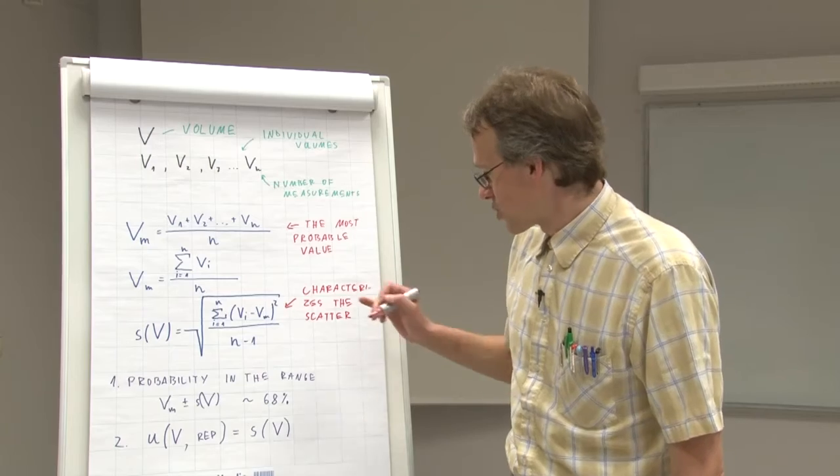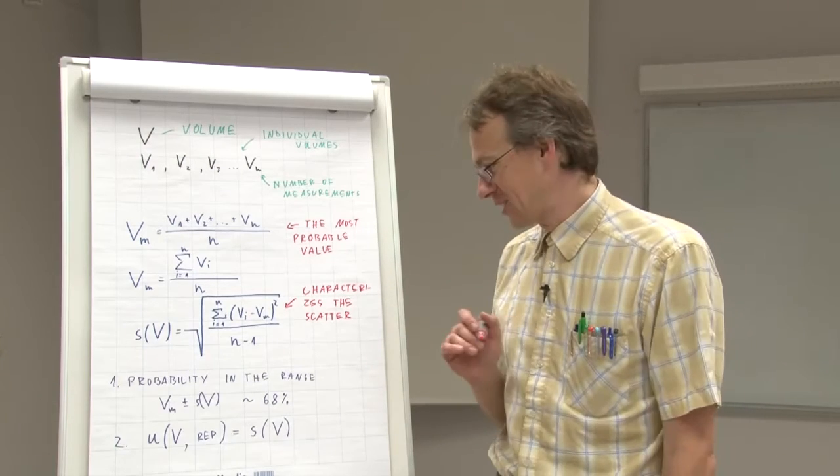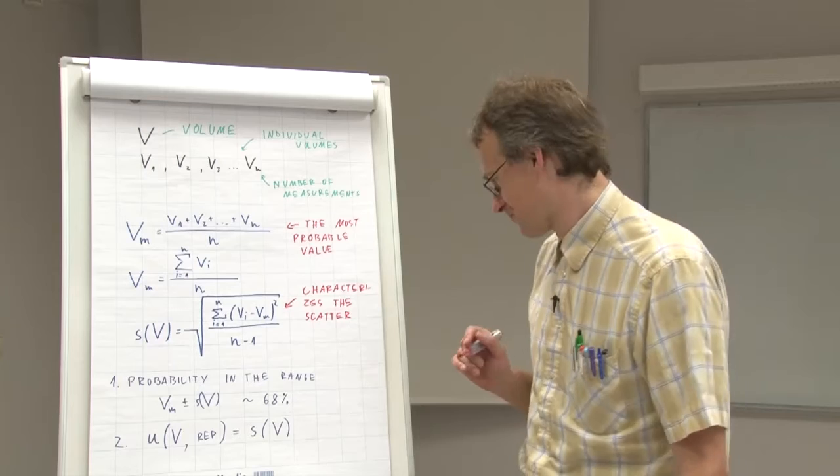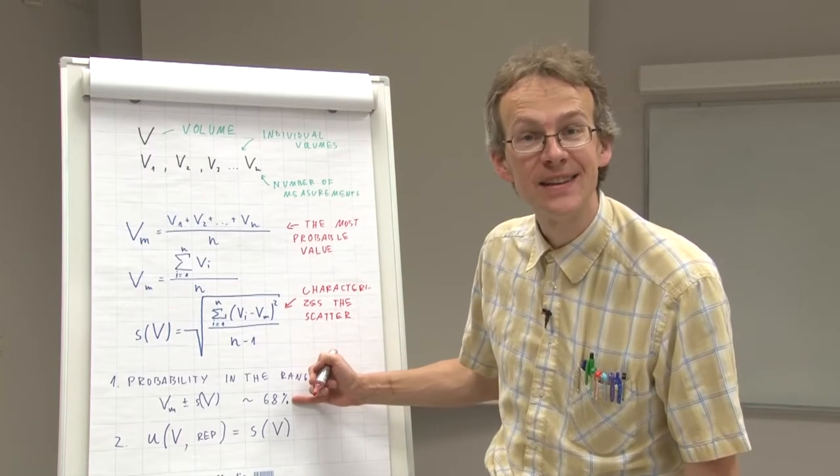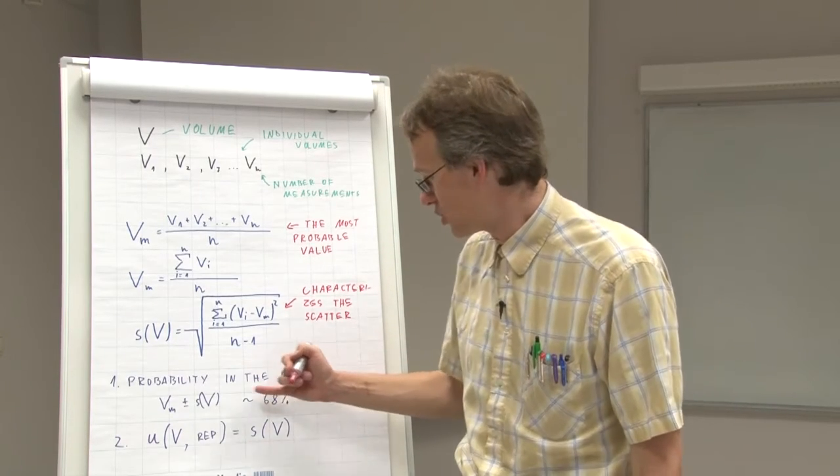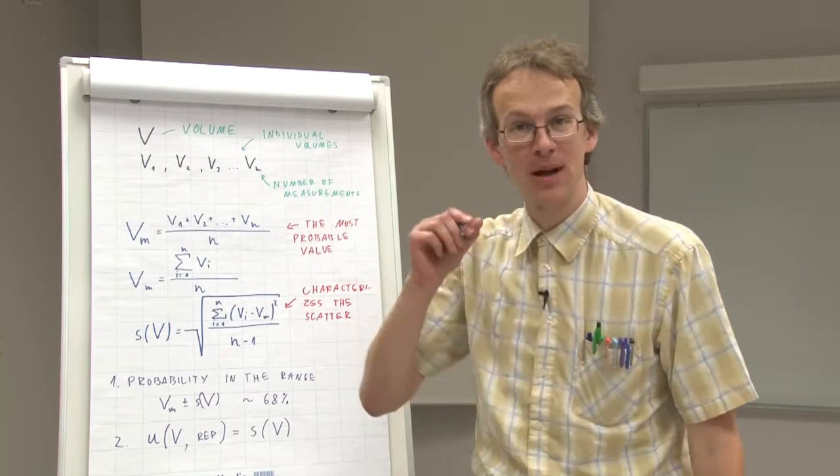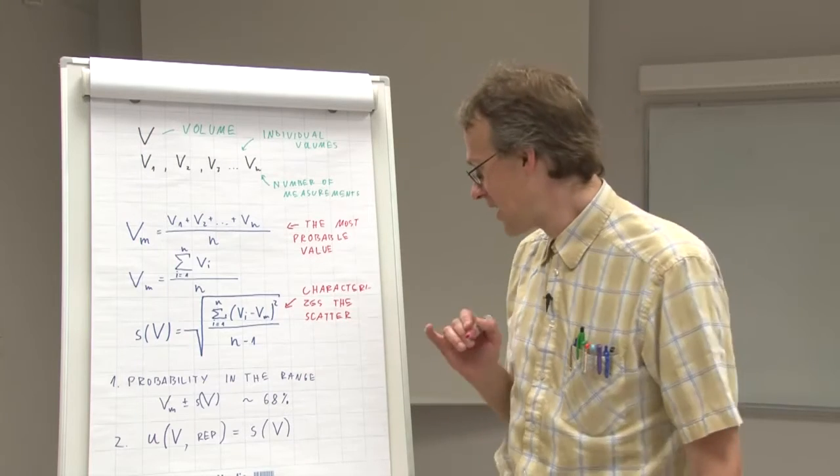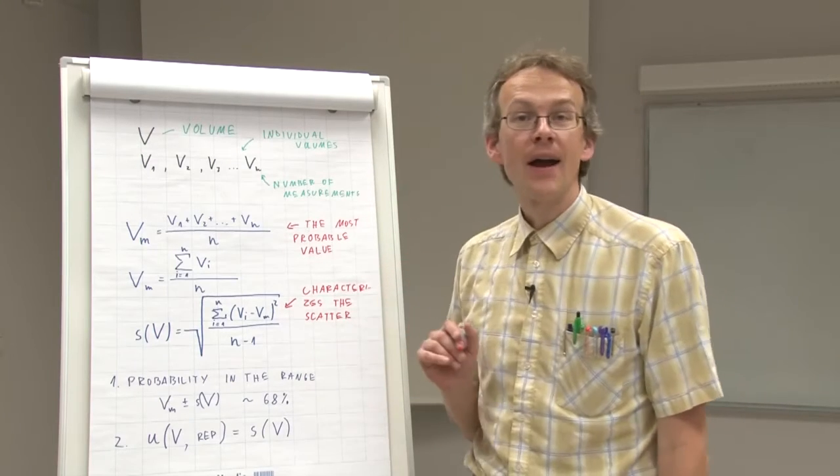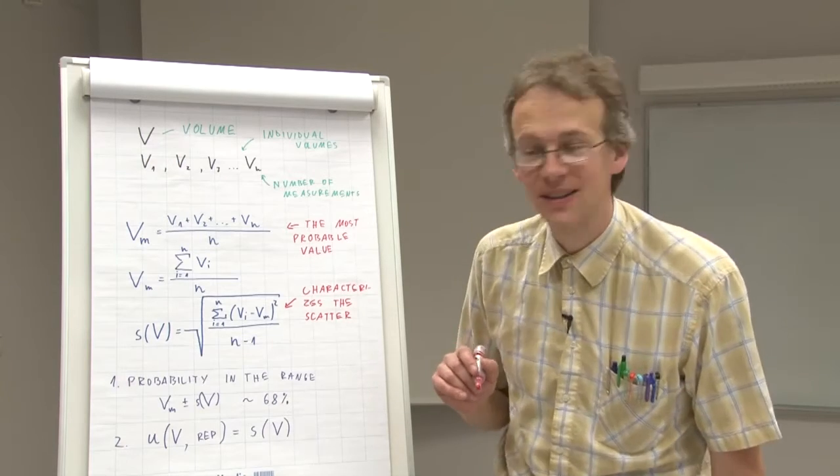The standard deviation carries two important bits of information. On one hand, it defines the range within which the probability of finding the next pipetted volume is roughly 68%. And finally, via standard deviation, we define standard uncertainty.